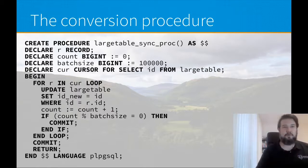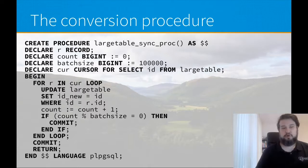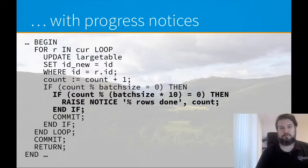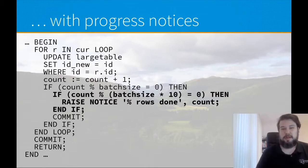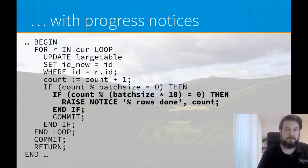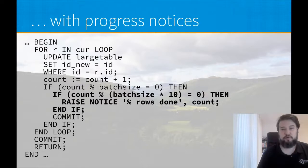What if we want this huge task to give us some progress indicator? We can add in the loop: if count modulo (batch_size multiplied by 10), then RAISE NOTICE rows_done. So it will tell us every million rows — 10 times our batch of 100,000 — the number of rows that have already been processed by the script.